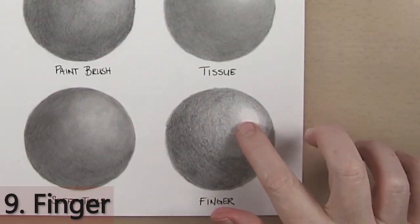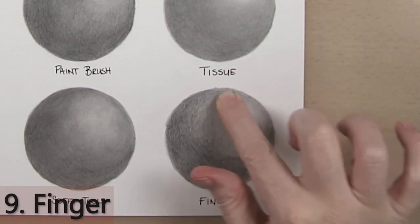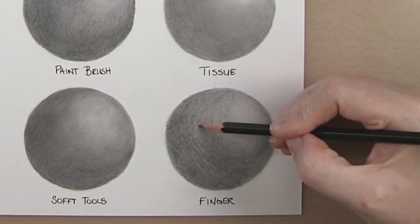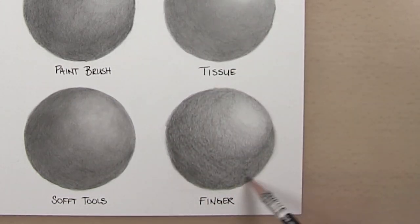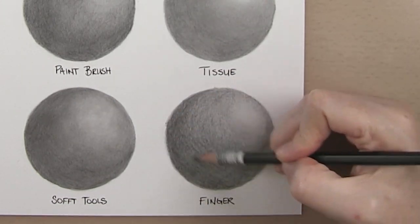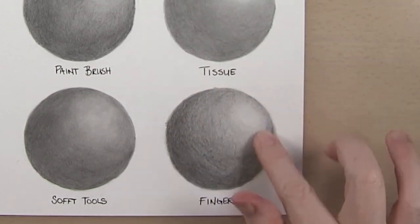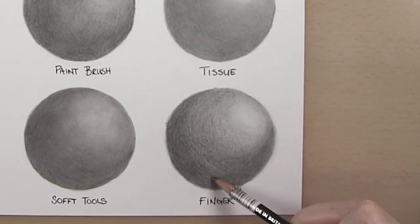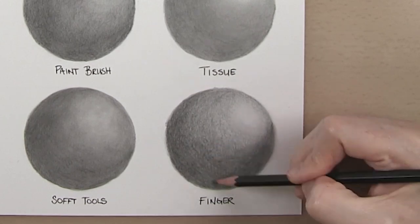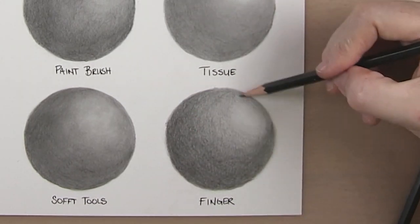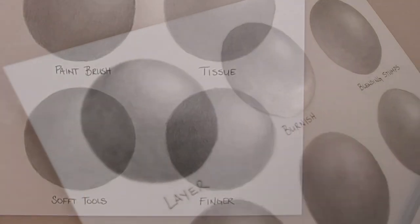The ninth and final method is something we all have and that is using your finger. Now this is not the best tool to use as you can transfer oils and sweat from your finger to your piece. The results are probably the roughest of all the methods as it really doesn't push the graphite into those peaks and valleys of the paper though it is always handy. I usually use this just to tap an area back a bit but not for overall blending. Besides your fingers get really dirty too.